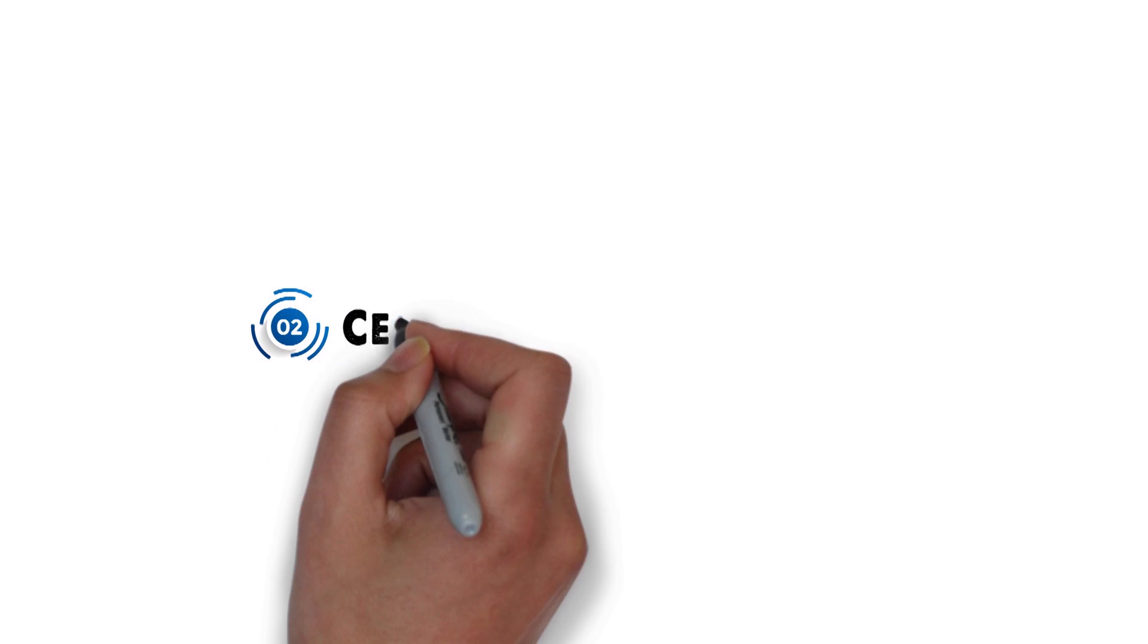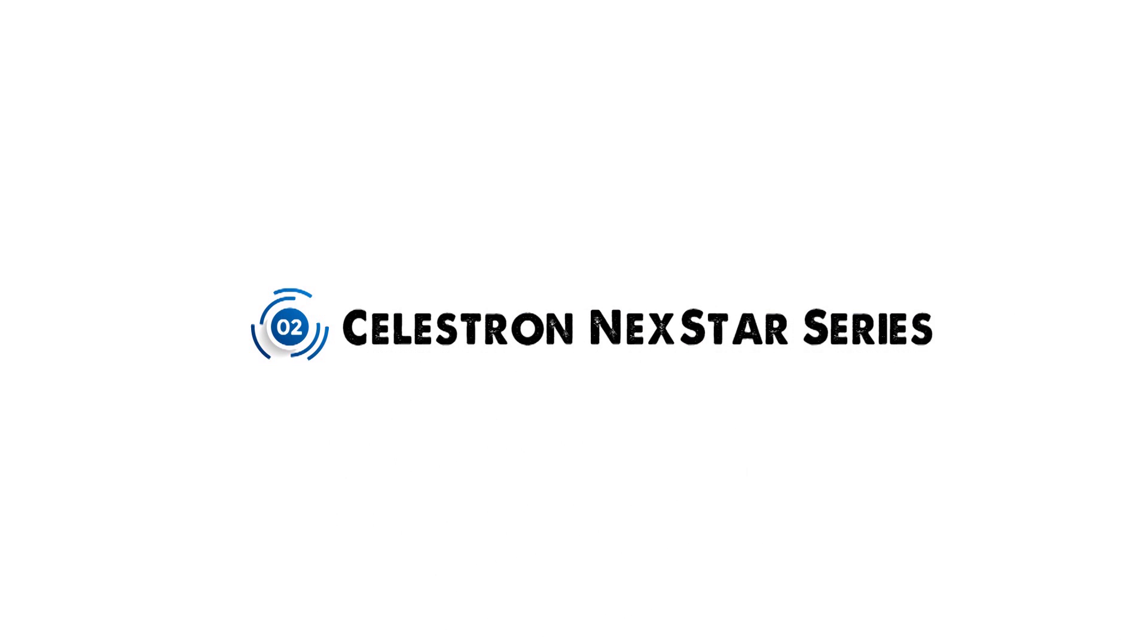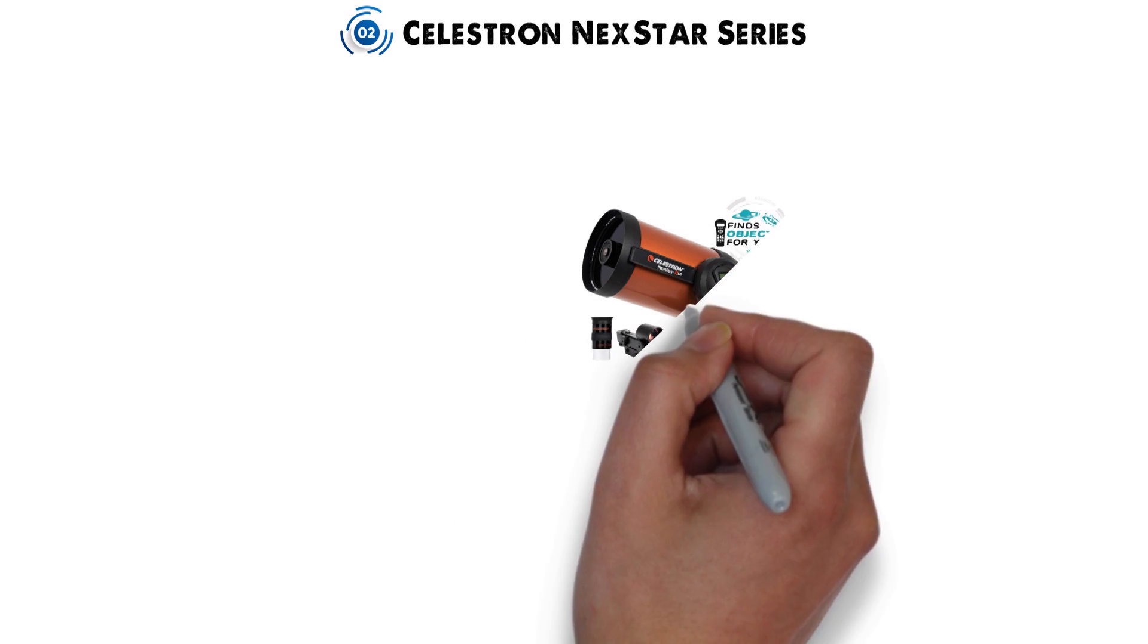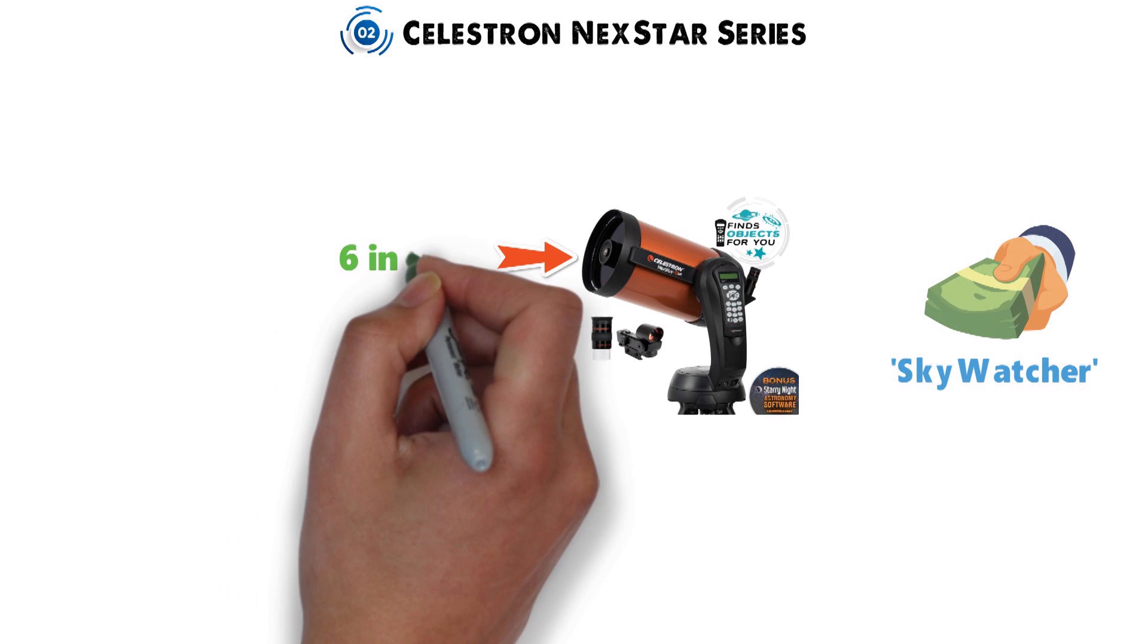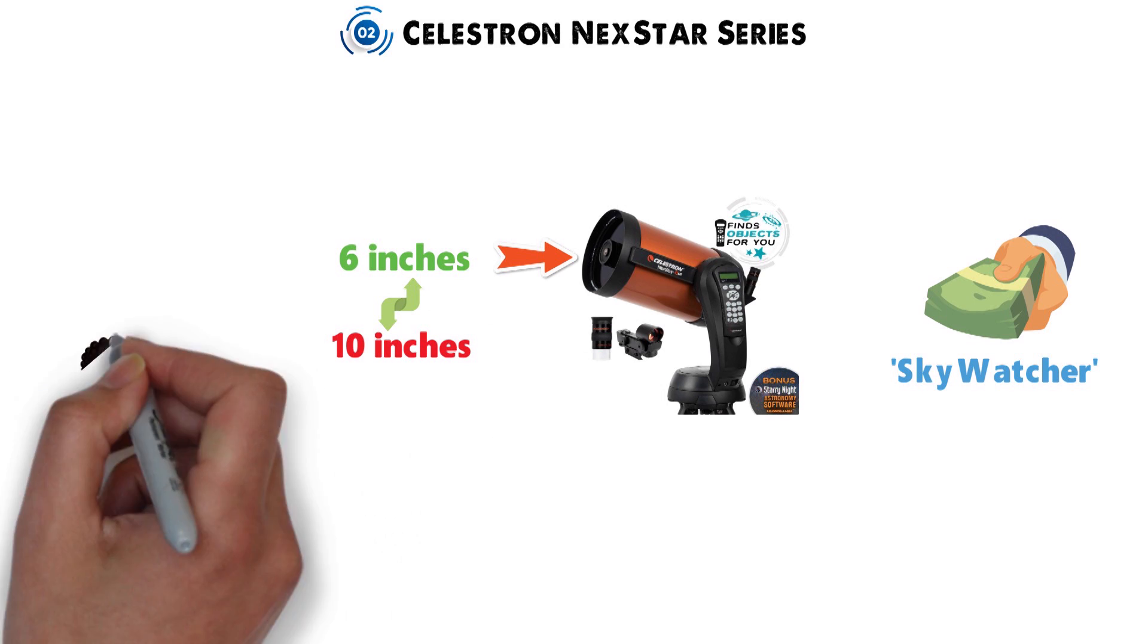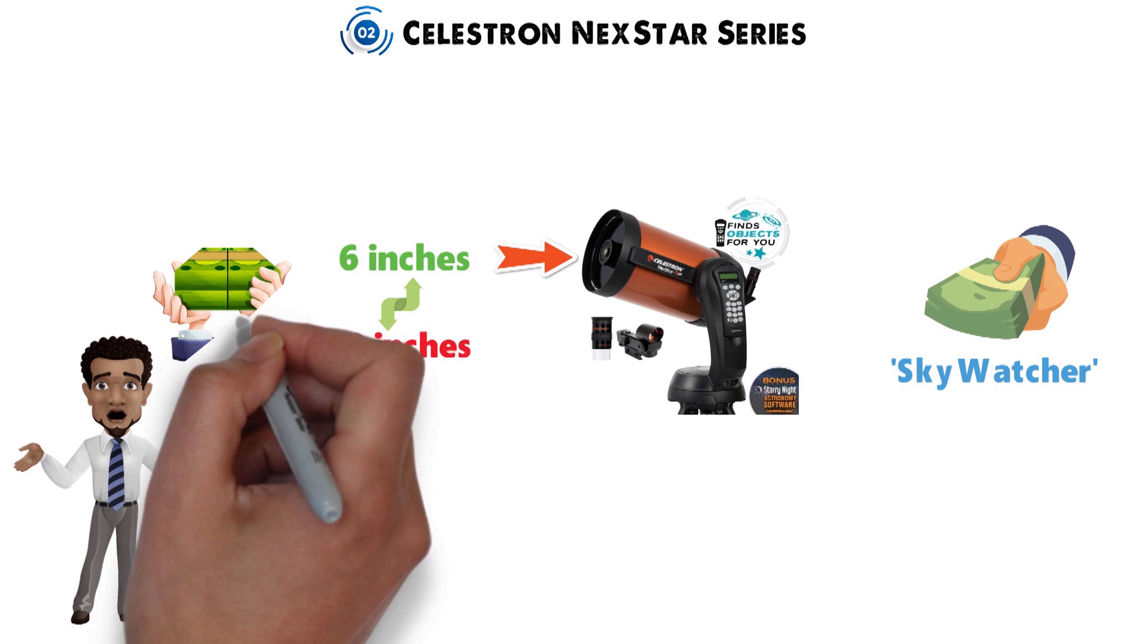At number 2 we have the Celestron Nexstar Series. Next on the list is the Celestron Nexstar Series. Here you're paying a similar price to the Skywatcher, but you're getting 6 inches of aperture instead of 10 inches. If you want more, you're going to up your budget significantly.